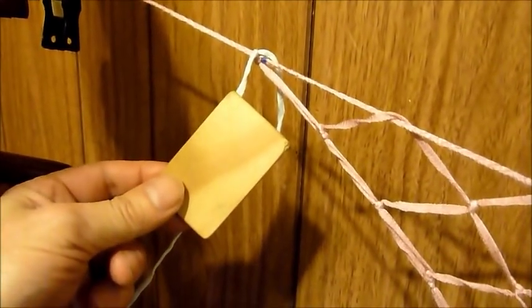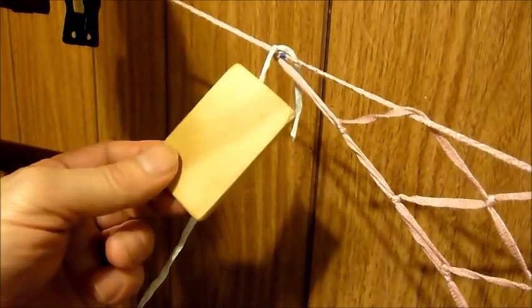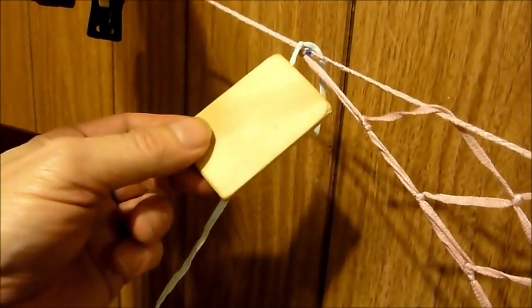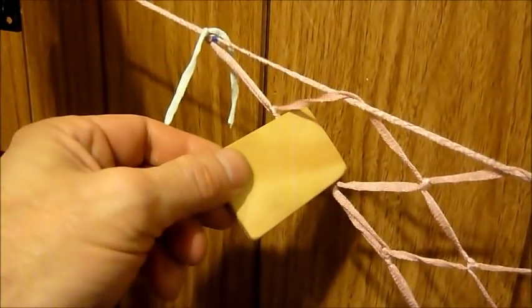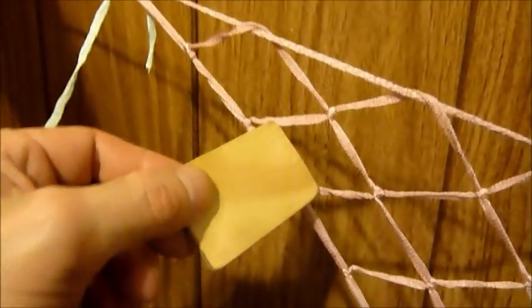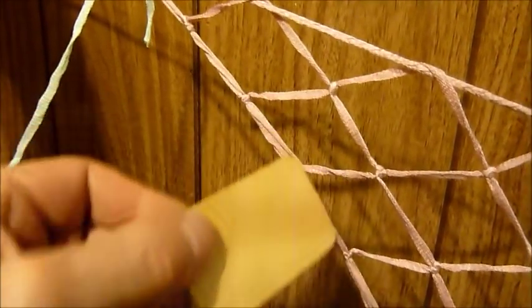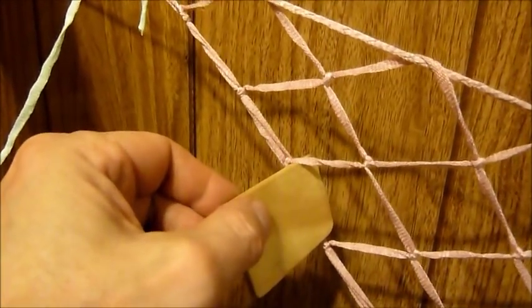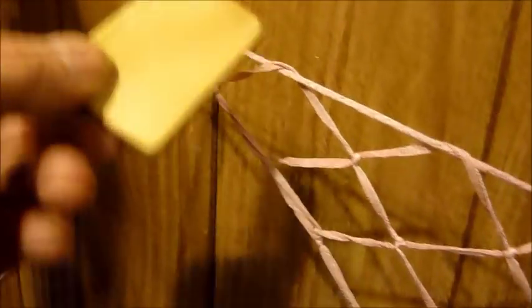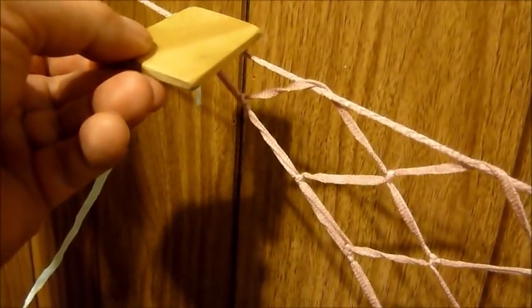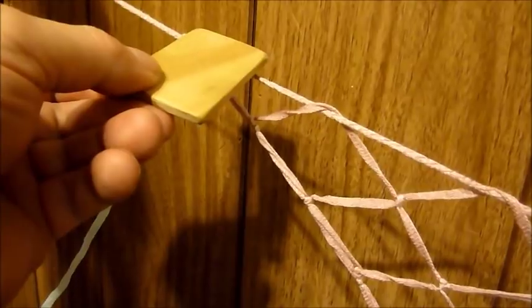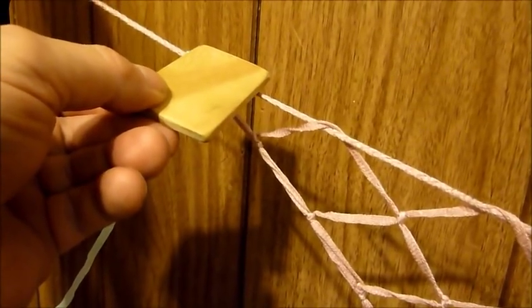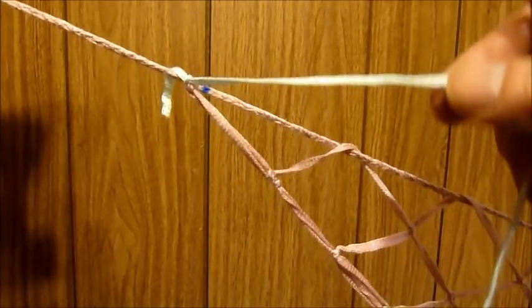This is the sizing card I used to build this net. And as you can see, its width is about the same as the distance between knots on the sides. And that is also our target distance between the knots we're going to make on the top too. Alright, here's the basic routine.